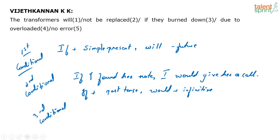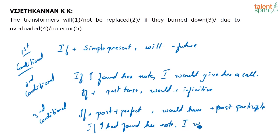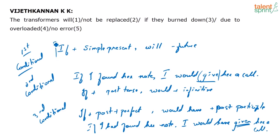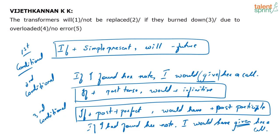Third conditional — what's the form? For third conditional, you need the past perfect. If plus past perfect, then would have plus the past participle. Same example: 'If I had found her note, I would have given her a call.' 'Given' is the past participle of 'give' — give, gave, given. So for second conditional you use the base form; for third conditional you use the past participle. You just need to remember the forms: first conditional this form, second conditional this form, third conditional this form.